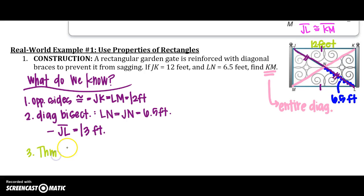Theorem 6.13 - we know that because it is a rectangle, my diagonals are congruent. I hope you could guess that. So I know that JL...